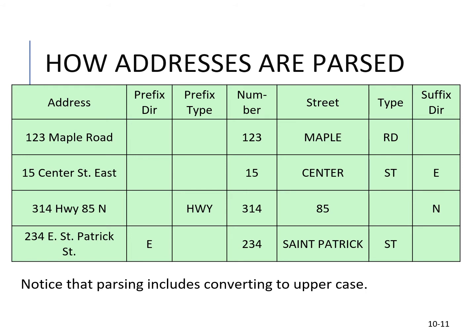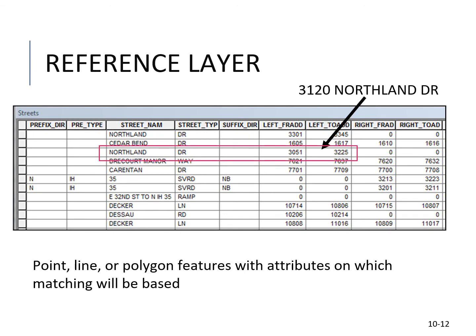Addresses are parsed in order to be matched. This includes converting to uppercase — the prefix number, prefix name, road or street type, and direction are split into prefix direction, prefix type, number, street type, and suffix direction. Street names must be uppercase for matching. Here is an example of the attribute table of a reference layer — a spatially oriented shapefile or feature layer, showing an address like 3120 Northland Drive with attributes on which matching will be based.